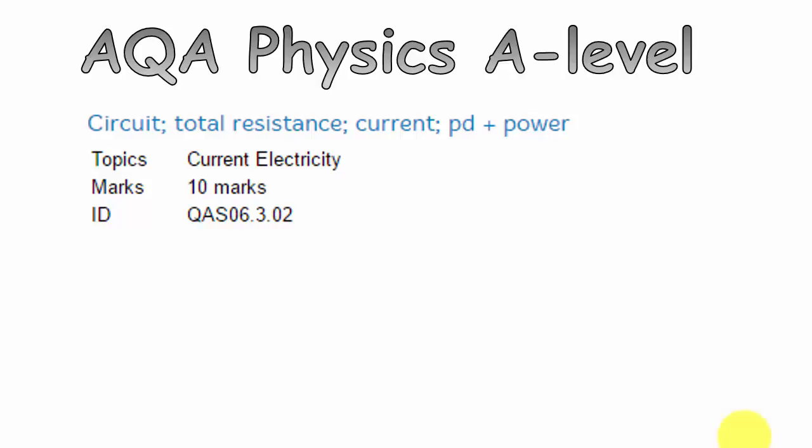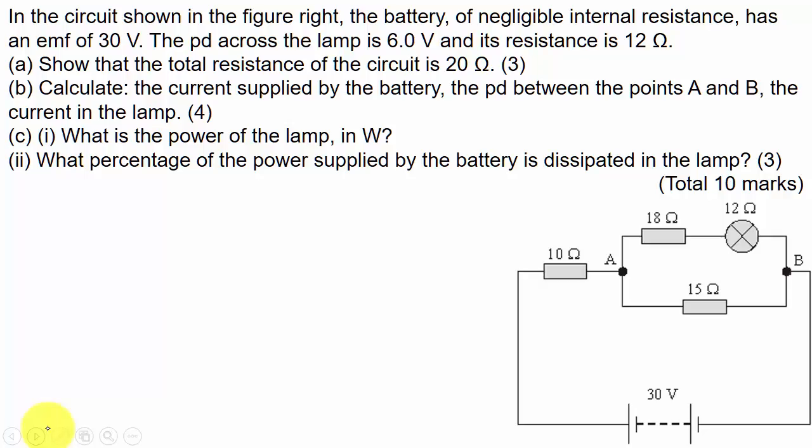Welcome to another video on an AQA physics question, this time on current and resistance. Please pause the video and read the question if you haven't already. We've been given a circuit diagram with various values. They've told us the internal resistance is negligible. The first question says show that the total resistance in the circuit is 20 ohms.